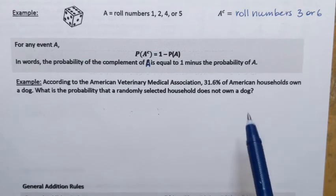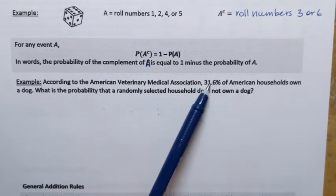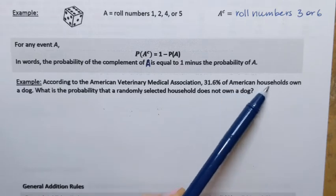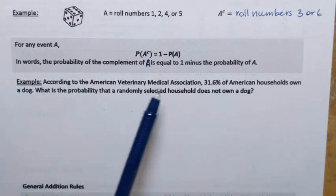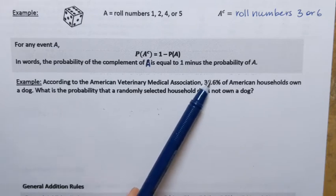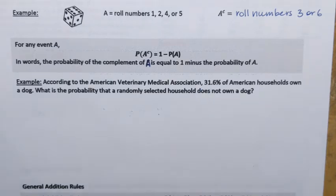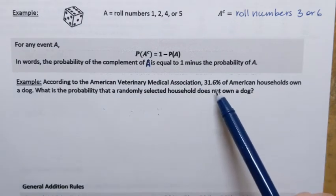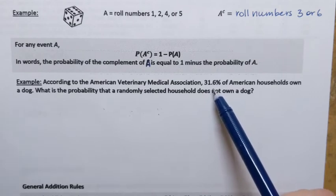Let's write down what's given here. We know that 31.6% of American households own a dog. That is a proportion, but remember that proportion, which is same as relative frequency, can be used to approximate probability.